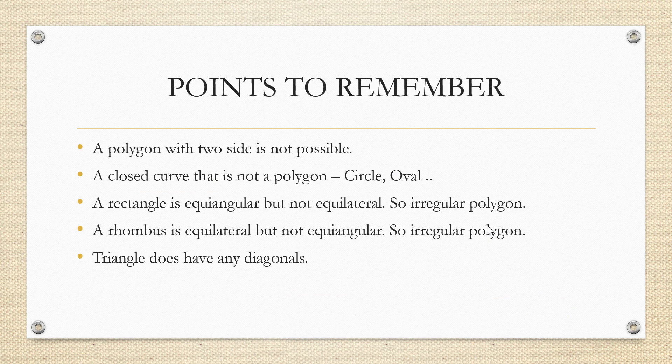A rhombus has equilateral sides, but it is not equiangular. So, it is an irregular polygon. And triangles do not have any diagonals.